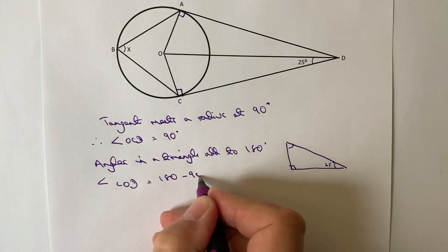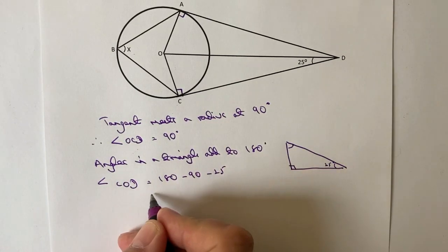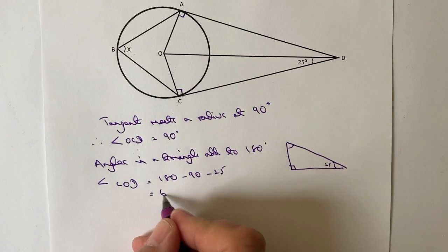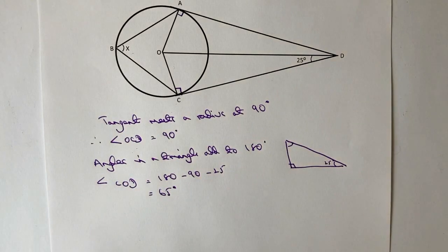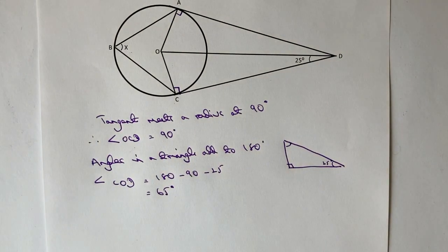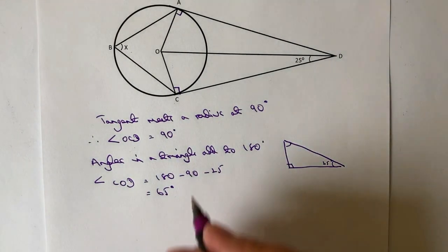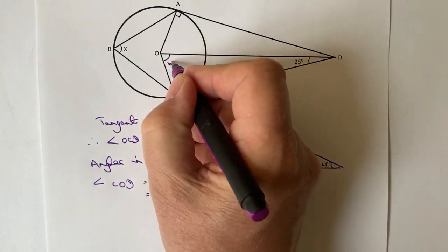So that's going to be equal to 180 minus 90 minus 25, so that's going to equal 65 degrees. Okay, so we're now in a position that actually we can tell that this angle is 65 degrees.